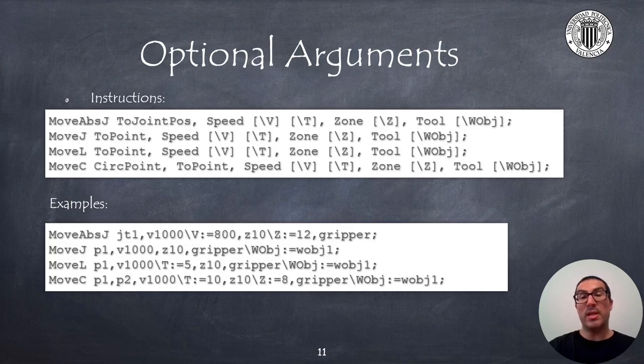An important argument is the work object, or WObj, which is the name of the reference system or frame that allows the trajectory to be readjusted based on the work object frame. So, if you modify the work object reference frame, the trajectory will be recalculated based on this frame, and that will allow you to work in different regions with the same motion instructions.